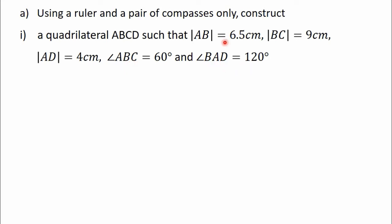We will have to select one of the sides given to us as the base. The side we select as the base will depend on the points on which the angles given fall. We have angle ABC falling on point B and angle BAD falling on point A. So I'm going to choose side AB as the base, because when I do that, I'll be able to construct angle ABC on point B and angle BAD on point A.